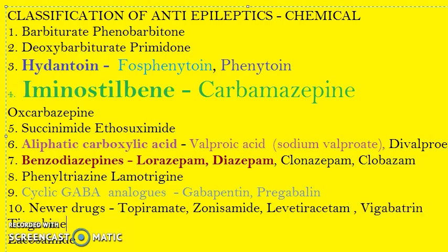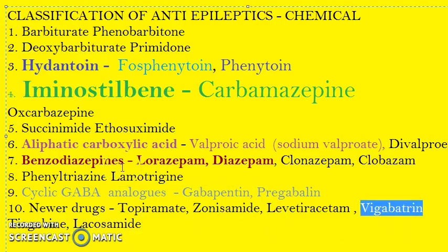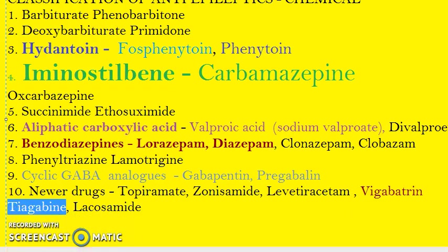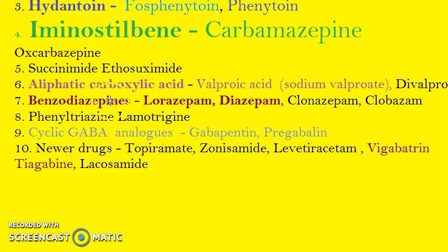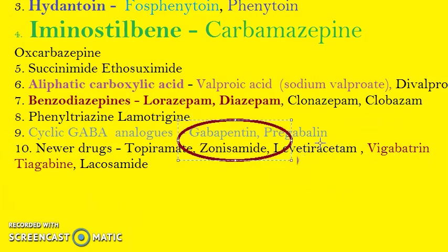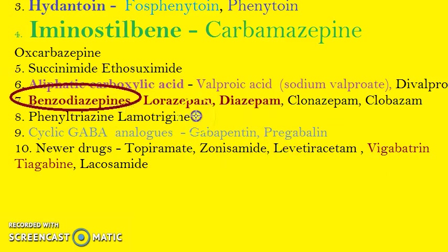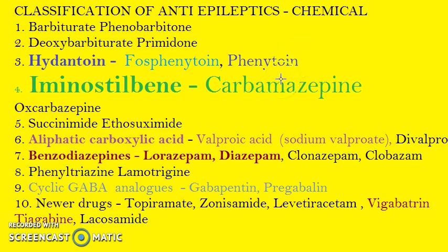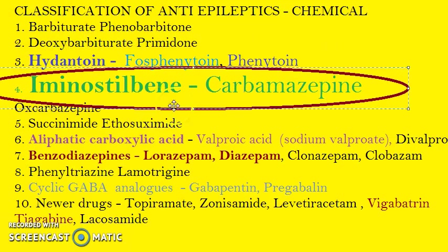Vigabatrin and tiagabine are also important newer drugs. To summarize: gabapentin and pregabalin are important; benzodiazepines — lorazepam and diazepam — are important; aliphatic carboxylic acid — valproic acid, also called sodium valproate — important; iminostilbene — carbamazepine, the most important one; hydantoin — phenytoin, the prototype drug.